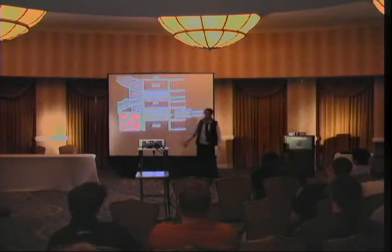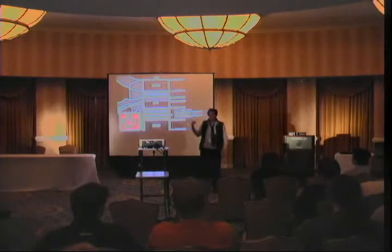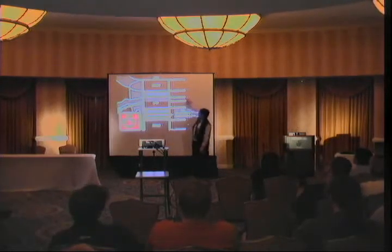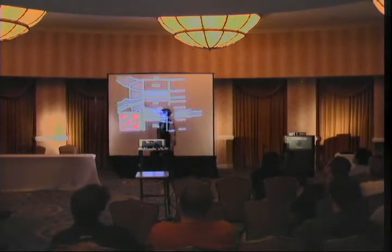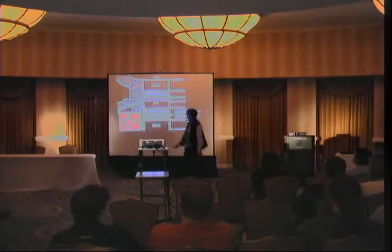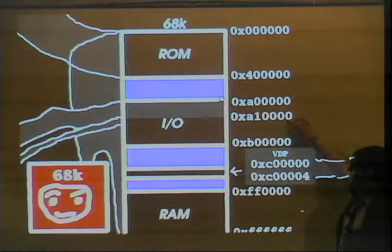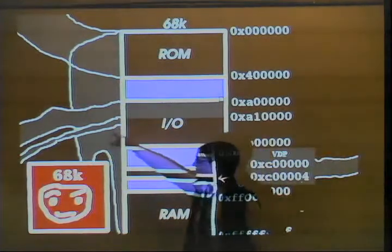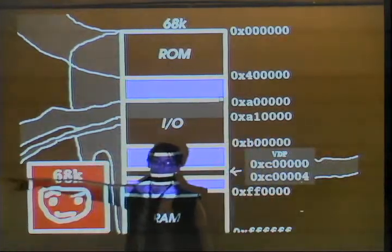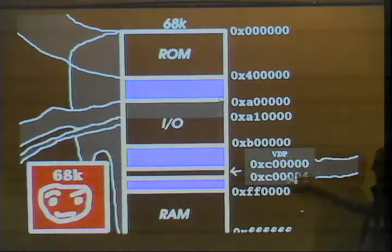Blue areas, we don't use. We don't use a lot of areas. Actually, you can use a lot of areas, but I don't use a lot of them, so I'm not going to care about them too much. This area right here is where the Z80 is mapped. You have the squiggly lines going down to the Z80. After that, we have a little area here which I didn't represent with numbers, unfortunately. That is mapped to the controller.